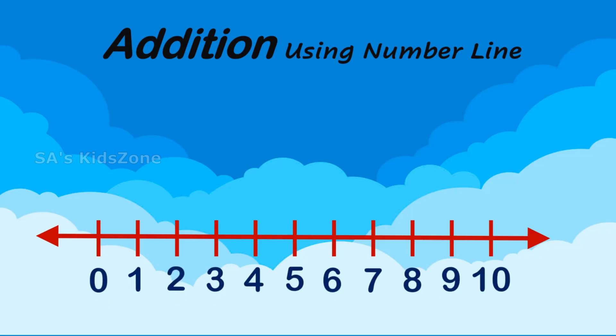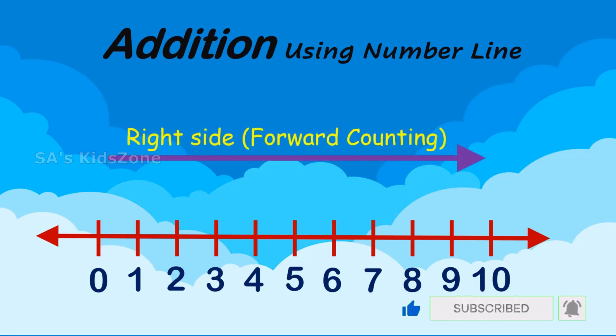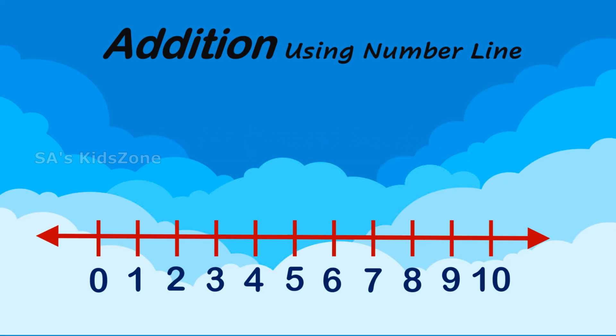And we have to always remember that when we do addition on number line, the numbers will always move towards right side, that is forward counting. Now, let's see how we do addition on number line.